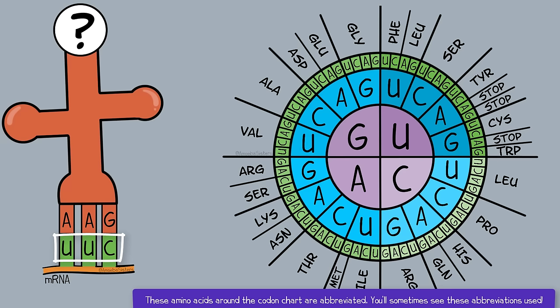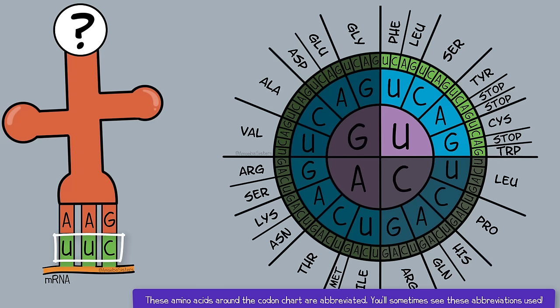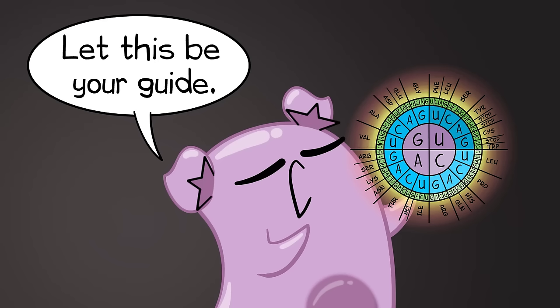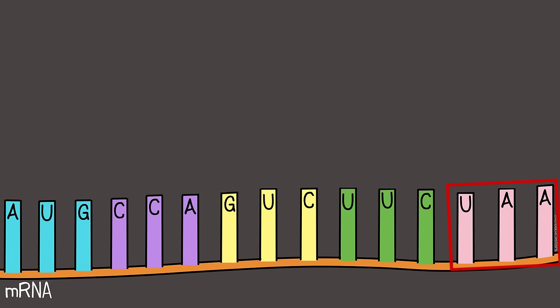We start with the center. First letter U, which isolates to this area. Then we move out one to the second letter U, which isolates further. Finally, we move one more time to the C. This is the amino acid phenylalanine. Your turn now to use the circular codon chart with the last codon, UAA.